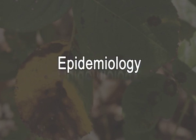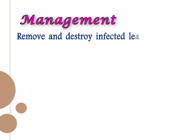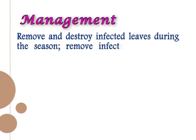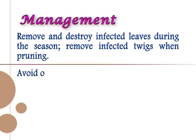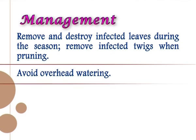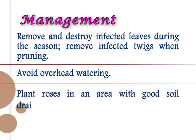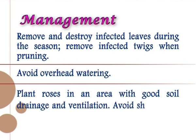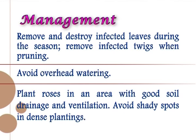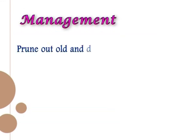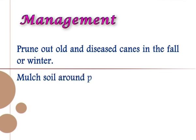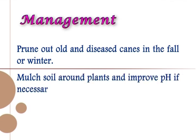Epidemiology: warm, wet weather favors the spread of the pathogen. Management: remove and destroy infected leaves during the season. Remove infected twigs when pruning. Avoid overhead watering. Plant roses in an area with good soil drainage and ventilation. Avoid shady spots and dense planting. Prune out old and diseased canes in the fall or winter. Mulch soil around plants and improve pH if necessary.